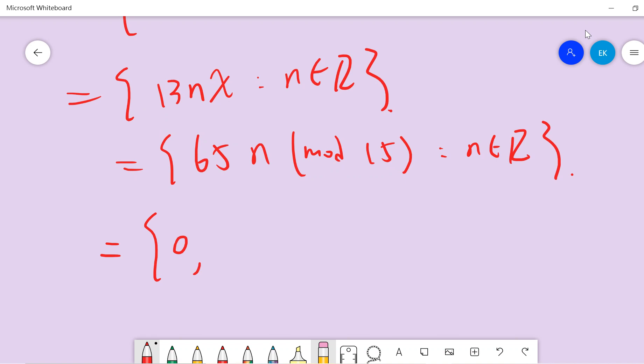How many elements does it have? We have 0, 65 modulo 15 which is 5, and 130. Maybe I should not do this because it is time consuming. What I can do is just read: 0, 5, 10.